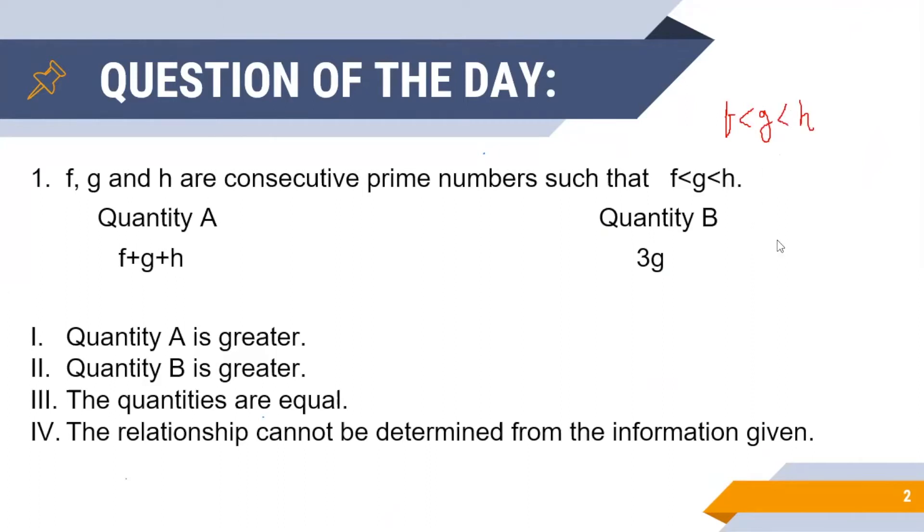Next we are given two quantities A and B such that A is the sum of the three consecutive prime numbers that is f, g and h, while B is three times the second consecutive prime number that is g.